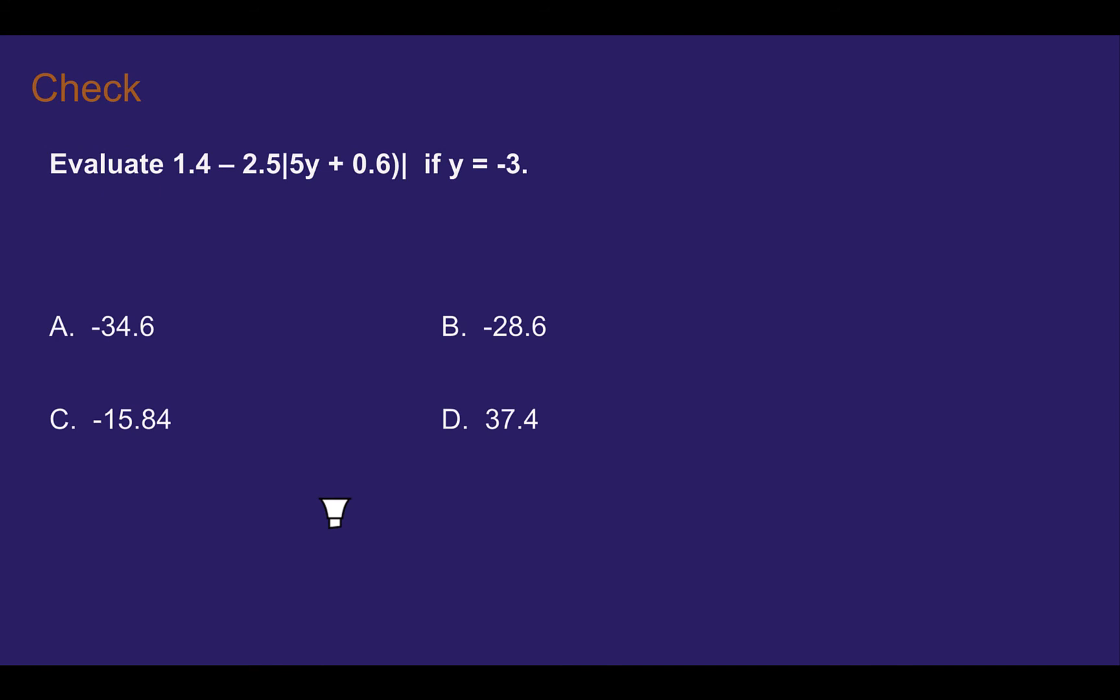Check your understanding. Pause the video and evaluate the expression if y equals negative 3. Choose from the answers below. Check your answer. Let's determine which answer it is. So first let's plug in negative 3 in for y. So 1.4 minus 2.5 absolute value of 5 times negative 3 plus 0.6 absolute value.